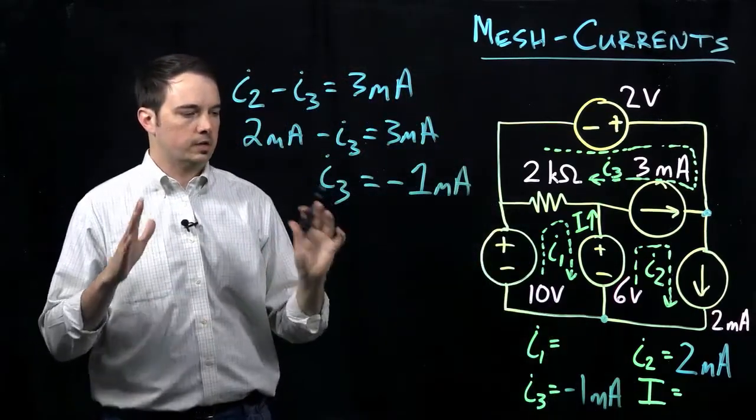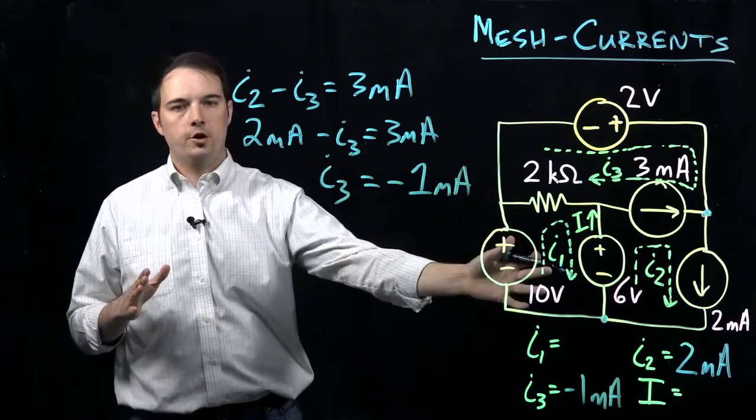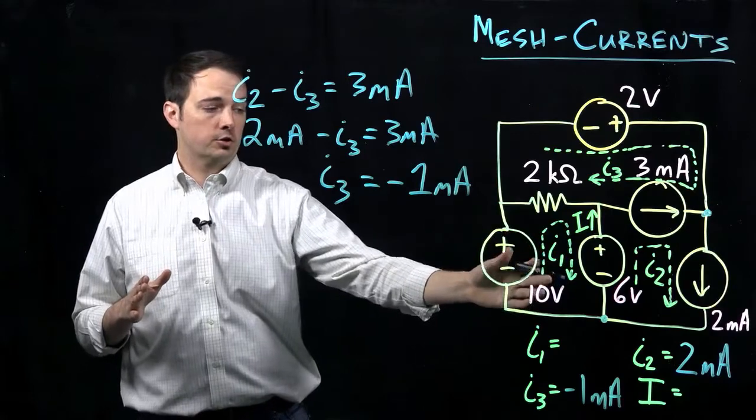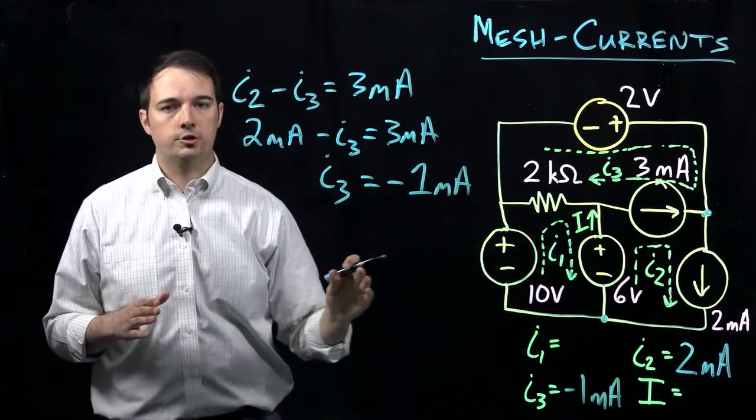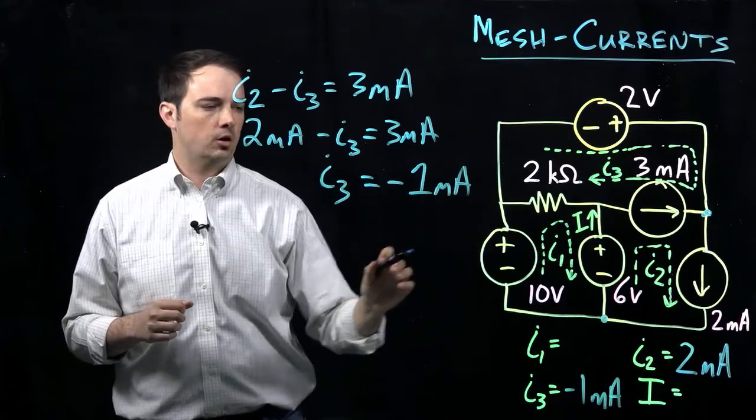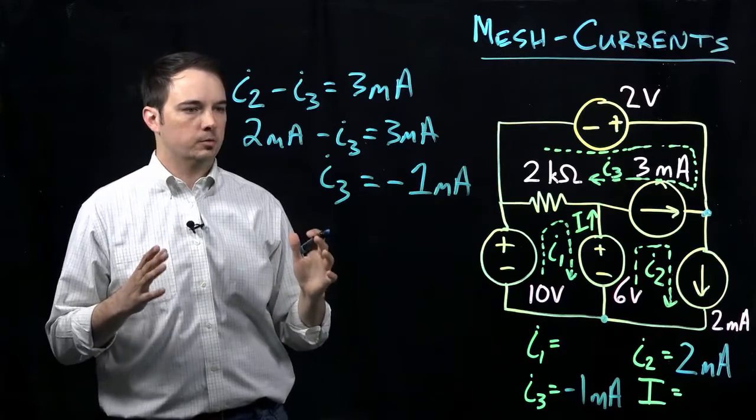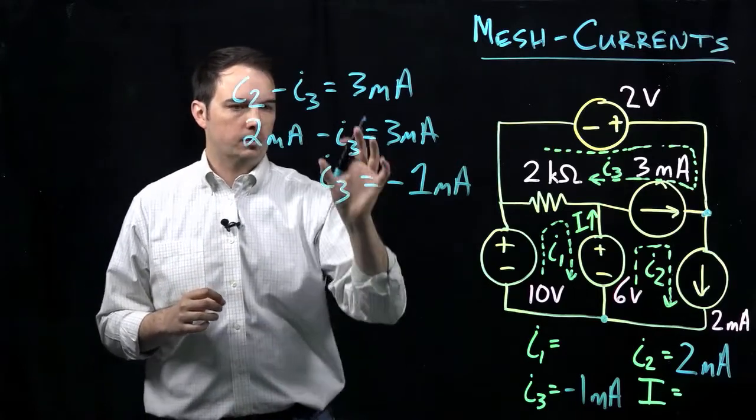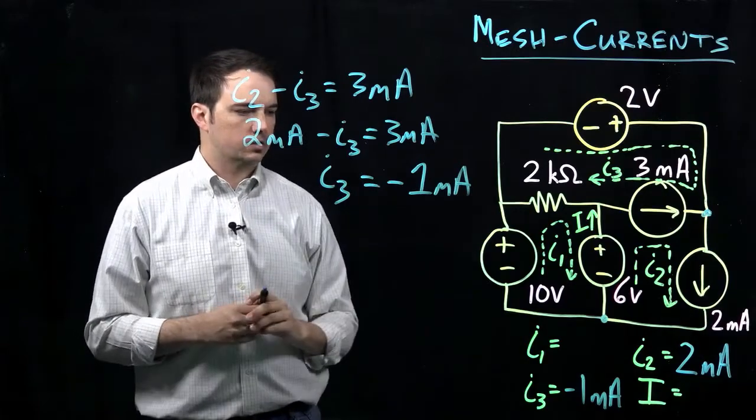So that's great, we already have a lot of progress. Now we can see that because we already know I2 and I3, really the only mesh current equation that we need to worry about writing and solving is one equation around mesh I1 to incorporate that variable, given that we already know what I2 and I3 are.